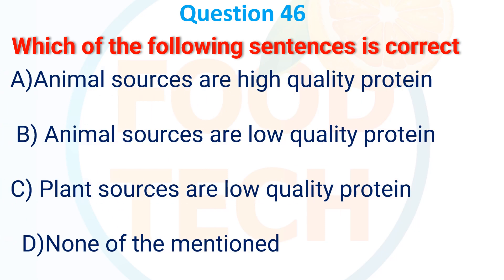Question 45: Which of the following statements is correct? A. Animal sources are high quality protein. B. Animal sources are low quality protein. C. Plant sources are low quality protein. D. None of the mentioned. The answer is A. Animal sources are high quality protein.